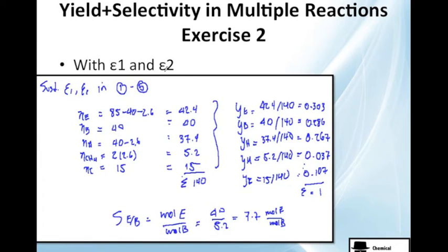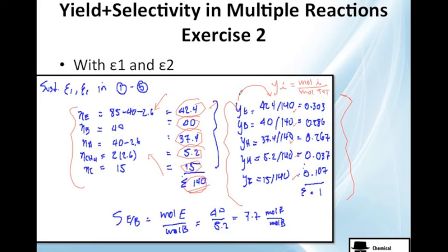Now, we have epsilon 1 and epsilon 2. That's just the first part. We're going to substitute these guys in the extent of reaction equations. So, just make sure you put all the data correctly. You add all 140 total moles. Good. You could also do this because actually we need to do it. They are asking us the final compositions.